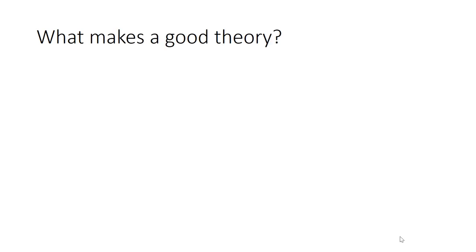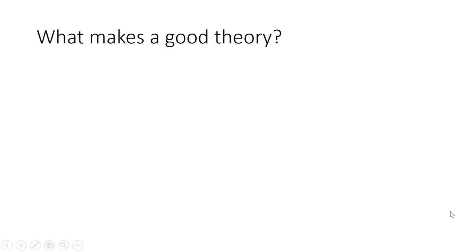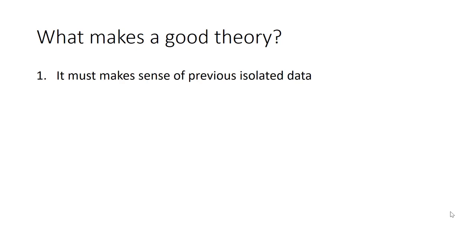A, B, and C are all good hypotheses about what those shards of glass were from, since they represent somewhat the reality of it being a vase. So the question is: what makes a good theory? Obviously there are going to be theories that aren't good and theories that are. How do we characterize or qualify a good theory?